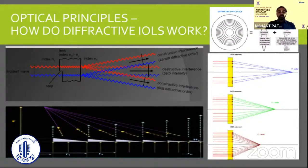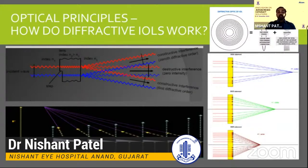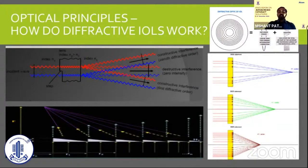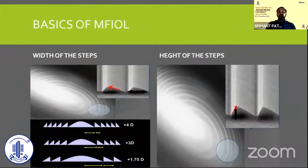We'll start with the basics. Any diffractive multifocal IOL is essentially about incorporating sequential diffractive optical steps — also known as Kinoform — on a monofocal design, with the actual size of the steps being just a few microns. The width of the step determines the addition of the diffractive multifocal IOL, and the height of the step determines the light energy distribution. The narrower the width, the higher the addition; the greater the height, the more light is diffracted for near vision.